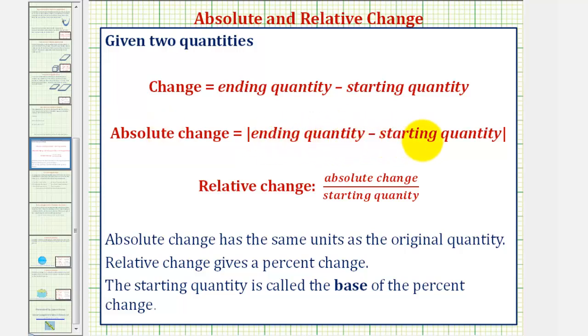Therefore, we'll have to indicate whether this is an absolute increase or decrease. And then finally, for the relative change, we take the absolute change and divide by the starting quantity. And again, we should express whether this is a percent increase or decrease.